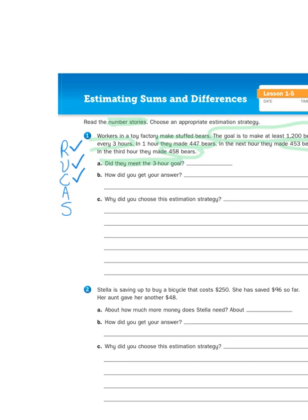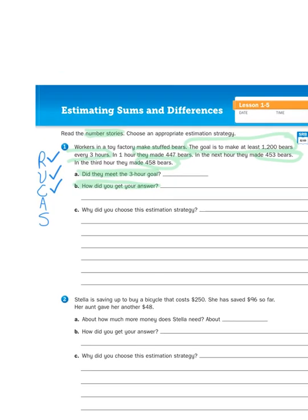So, how do you get your answer? Well, we need to come up with an action plan. So our action plan is to round each of those numbers to the nearest hundred, and then we're going to come up with a strategy to solve it. So, 447, 453, and 458.